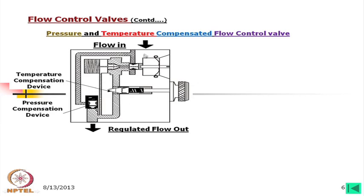Looking at this device: the flow is coming in, and depending on the orifice opening here the flow comes to this side; we can adjust this orifice to decide the amount of flow. Here there is a range of adjustment — it cannot be made from 0 to 30 liters per minute; it might be controlling within a range, say 25 to 30 liters per minute, depending on the size of this orifice.